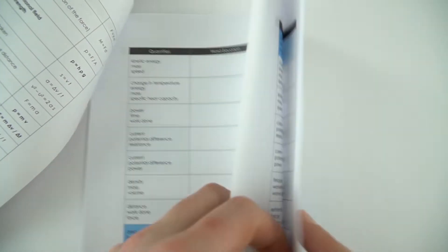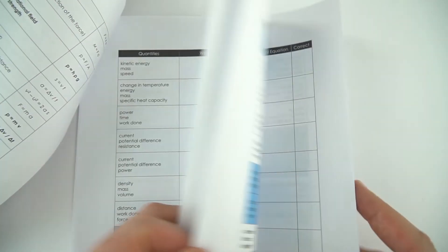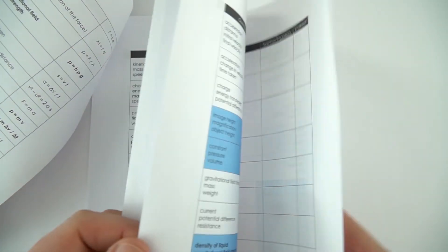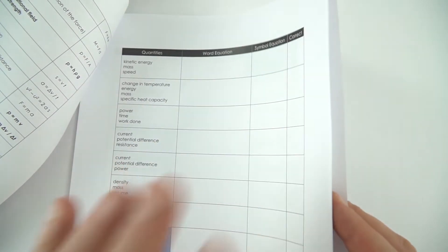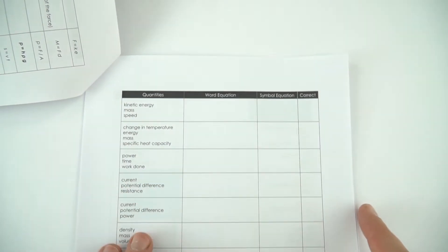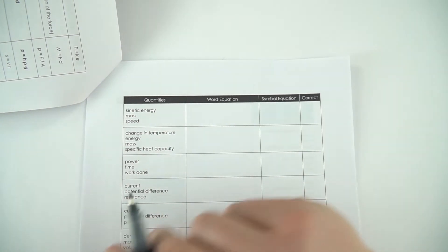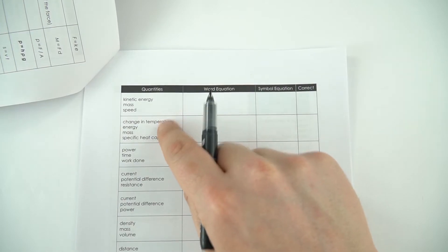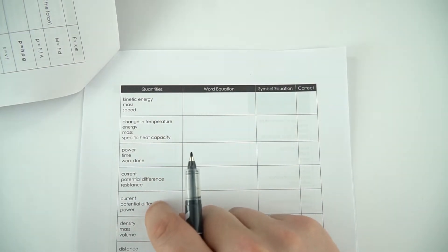What I've got here is a document you can print out. I'd recommend if you have the option or ability, print it out several times. It's got several tables - eight tables in total. The way you could use it is I've just got the quantity down here. The first one is kinetic energy, mass and speed, and I've put the quantities in alphabetical order.